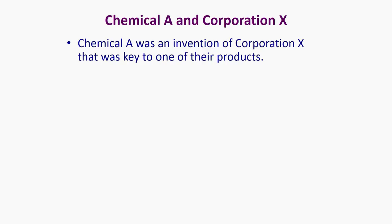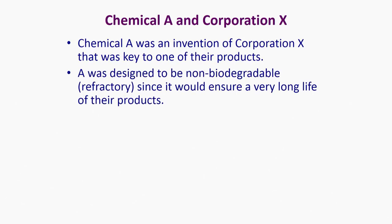Chemical A was an invention of corporation X. It is not a very wide class of chemicals — organic chemicals, some found in nature and manipulated slightly to give specific properties for a specific application. A very large number of chemicals like this are invented by chemists all around the world, and properties of these chemicals are measured for various applications, including environmental properties of fate, transport, and toxicology. Chemical A was invented by corporation X because it served a very specific purpose in one of their key products — it was designed to be non-biodegradable since it would ensure a very long life of the product.